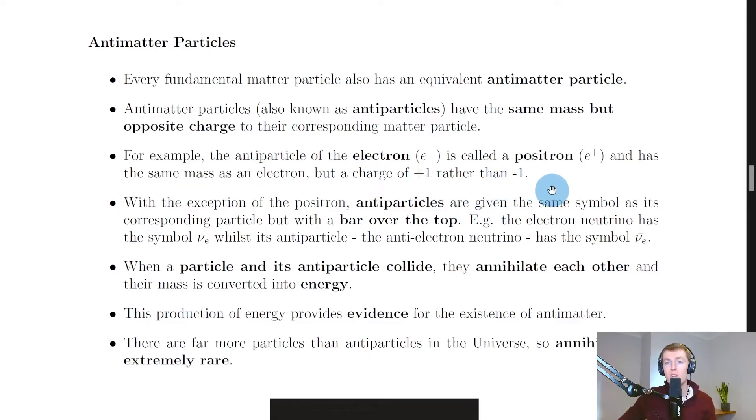So we're saying that the electron is the matter particle and it's got an antiparticle called the positron, which has the same mass but opposite charge. And it's important to remember that every matter particle will have its own antiparticle with the same mass but opposite charge.